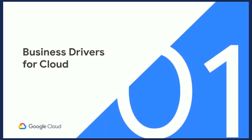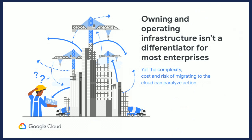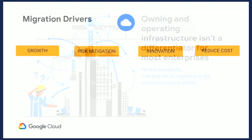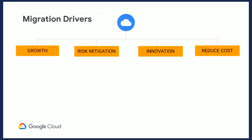I'll quickly touch upon why enterprises are migrating to the cloud. Can I get a quick show of hands — how many of you own your own power grid to supply electricity to your houses? As expected, I got only one hand. Owning our own infrastructure is not really a cost-efficient way to supply electricity. Similarly, enterprises are realizing that owning and operating your own data center is not cost-efficient. The real differentiator is what kind of products and services you deliver to your end customers. There are top four migration drivers for enterprises of any size.